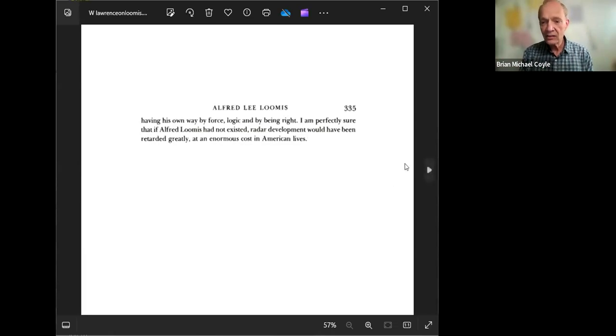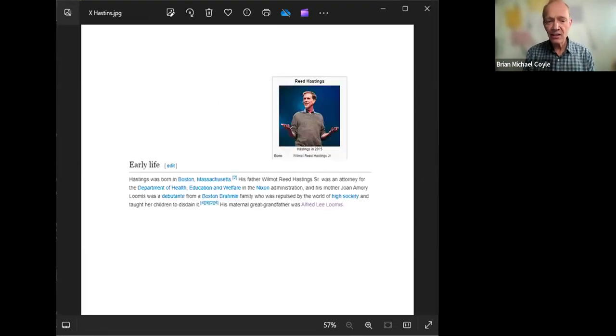His great-grandson is Reed Hastings, the founder of Netflix. Hastings' mother's maiden name is Loomis. Perhaps Netflix should consider a series about Alfred Loomis, or maybe Reed Hastings knows Loomis wouldn't want it.